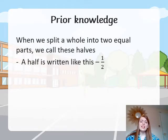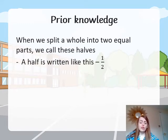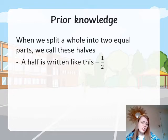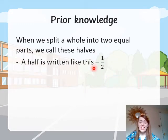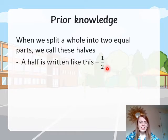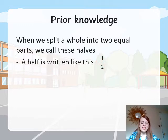So let's think back to our prior knowledge — what did we already know? It's so important before we learn something new that we think back to the knowledge and skills we already have. We should know that when we split a whole into two equal parts we call these halves, and a half is written with the denominator two, because it's telling us that we split a whole into two parts, and the numerator is one because we're speaking about one of these halves.